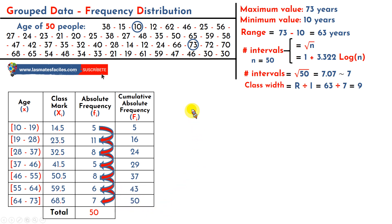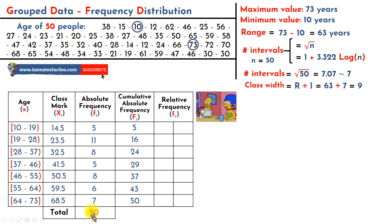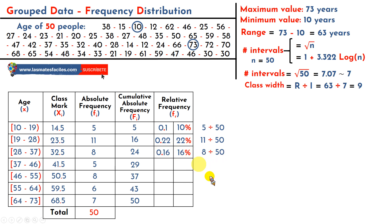Now let's talk about relative frequency — the relationship between each absolute frequency and the total. We take each absolute frequency and divide it by the total. I divide 5 by 50, which gives 0.1, and if I multiply by 100 I get 10%. So 5 corresponds to 10% of the total — that is the relative frequency. Dividing 11 by 50 gives 0.22, or 22%. Dividing 8 by 50 equals 16%, and I continue like that with the rest.